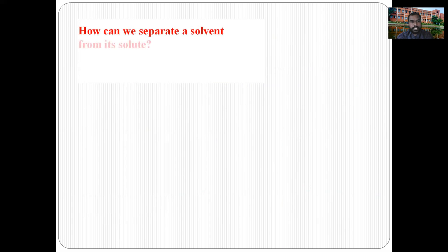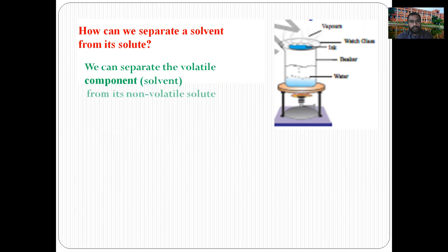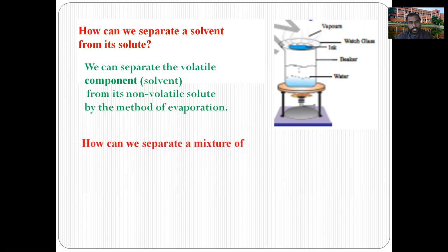How can we separate a solvent from its solute? If the solvent is volatile, we can separate the volatile solvent component from its non-volatile solute by the method of evaporation. Evaporation is the process of vaporization of a liquid below its boiling point.